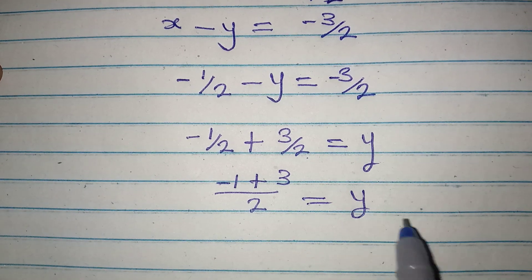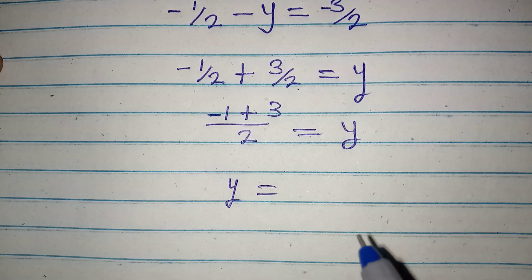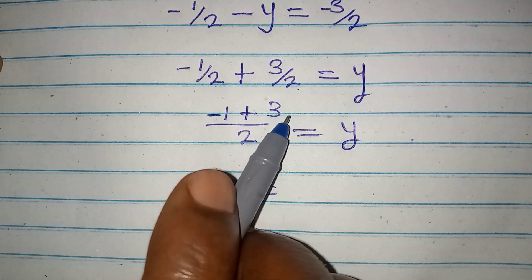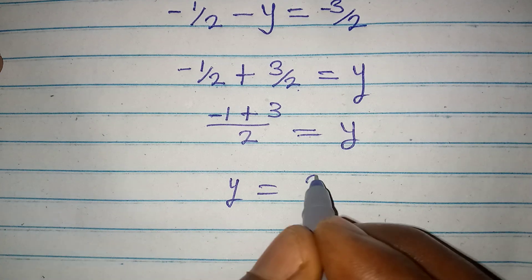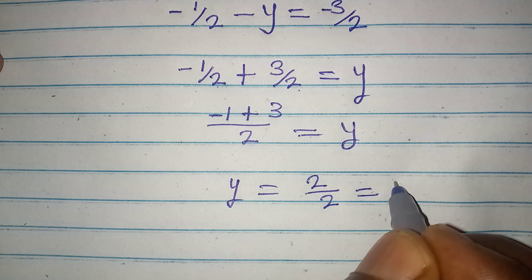And then this is equal to y. Now this means that y is equal to minus 1 plus 3 is plus 2. That would be over 2. And this is giving 1.